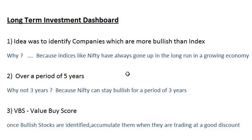We measure the bullish factor of each stock over a period of five years. Why not two or three years? Because over two or three years, Nifty can constantly be in a bullish mode, so there'll be a lot of noise — even junk companies will go up when Nifty is constantly going up. We want to avoid junk companies and find companies which perform well even when Nifty is going down. In any five-year period, Nifty will be in a bearish or correction mode for at least one year.